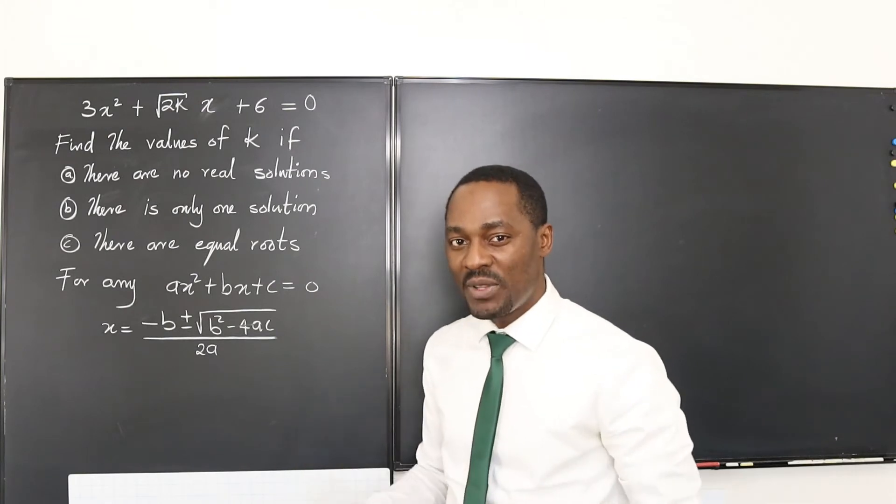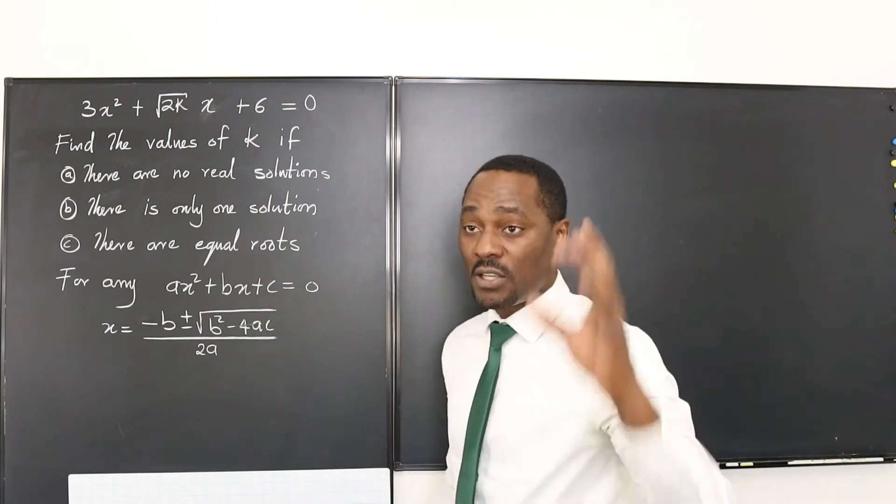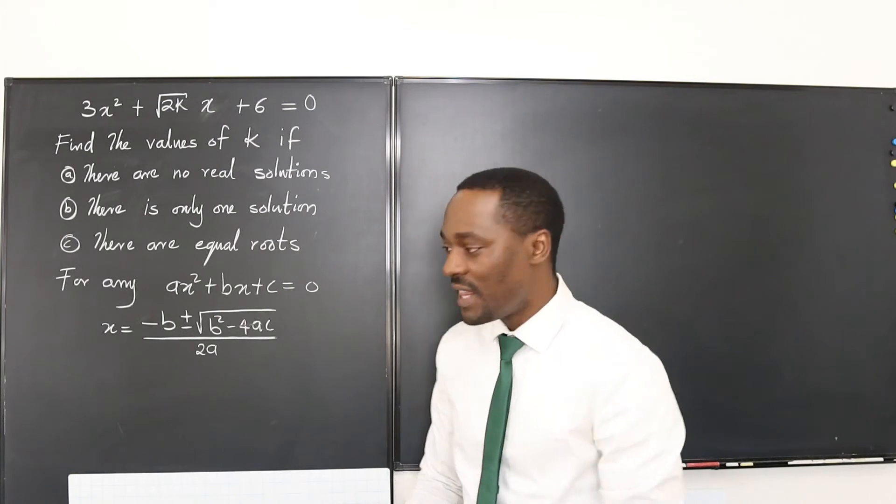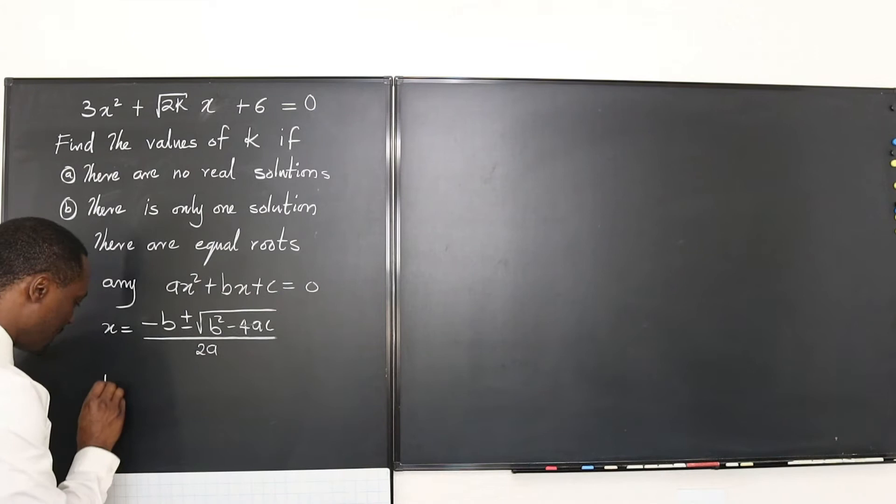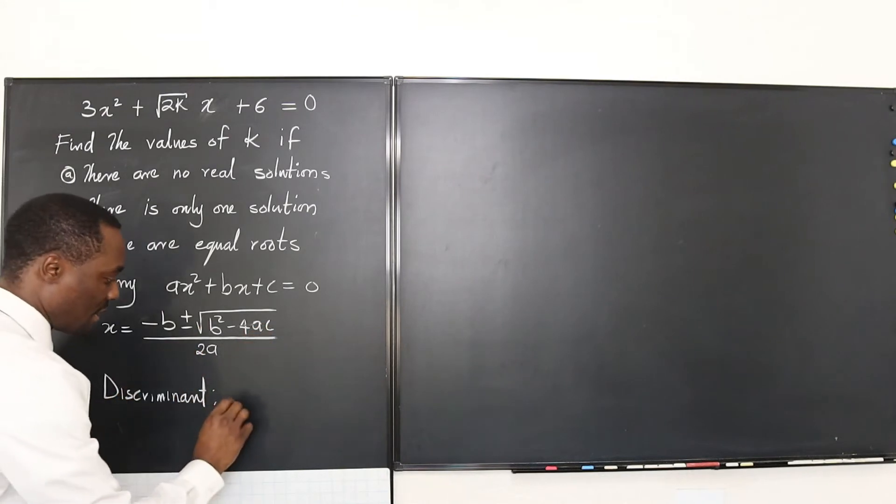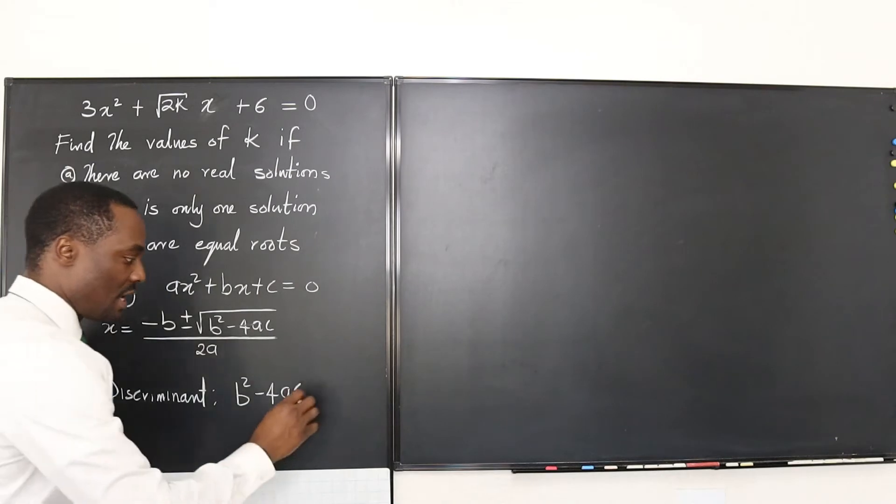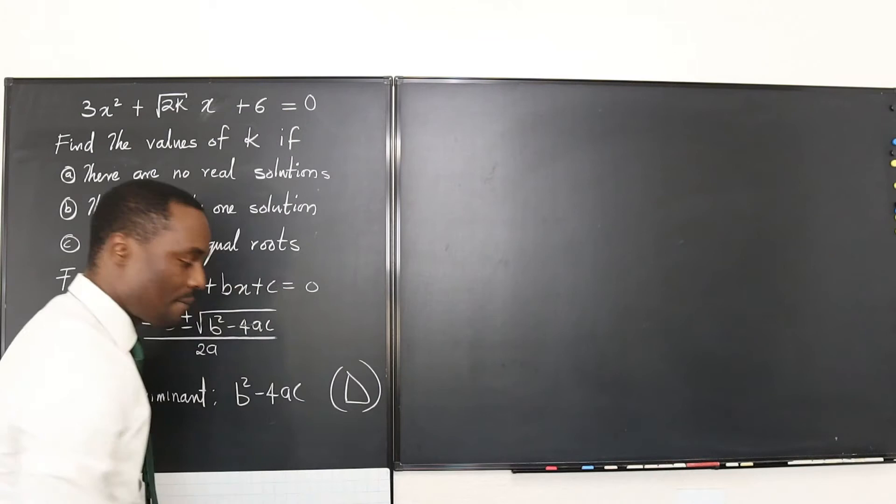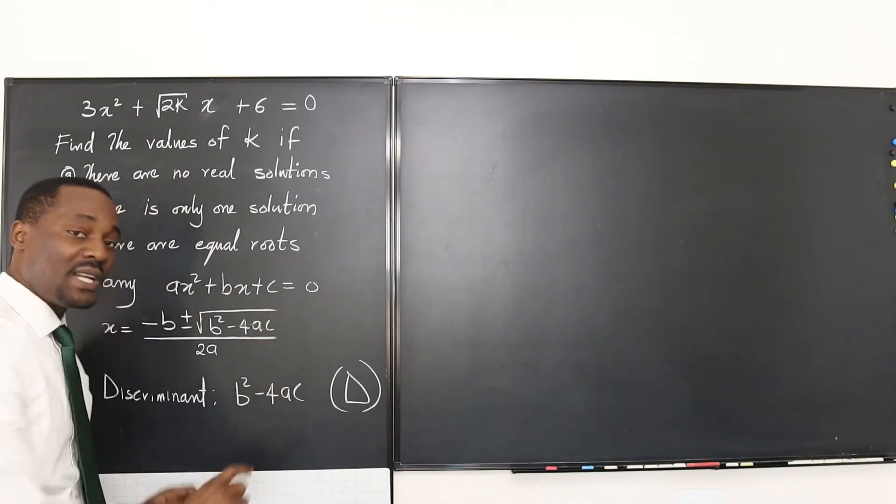Which means that b squared minus 4ac must be greater than zero or some people say b squared must be greater than 4ac so that you can subtract it from it. So however you like to remember that, just know that this part of this equation is what determines the characteristic of the number and type of solution and that's why this part is called the discriminant. In some books it is denoted as capital D.